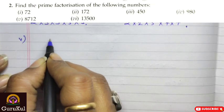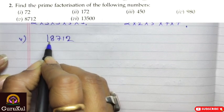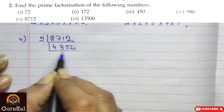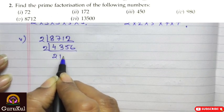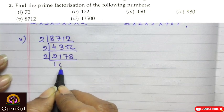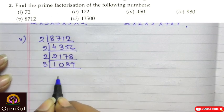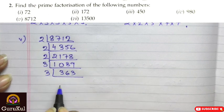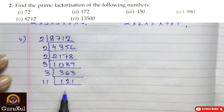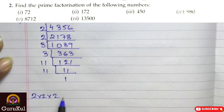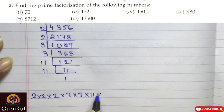Number 5: the figure is 8,712. Starting with 2: 8712 ÷ 2 = 4356, ÷ 2 = 2178, ÷ 2 = 1089. Then 1089 ÷ 3 = 363, ÷ 3 = 121. Then 121 ÷ 11 = 11, ÷ 11 = 1. So the prime factorization is 2 × 2 × 2 × 3 × 3 × 11 × 11.